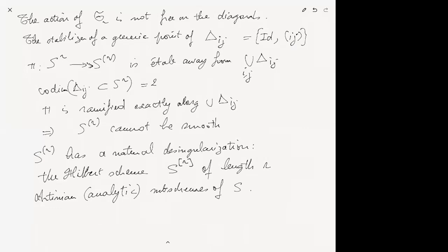There is a natural map from this Hilbert scheme to the symmetric power, which sends a subscheme Z to the underlying cycle — a zero-cycle of degree r, because the length of the subscheme is r.